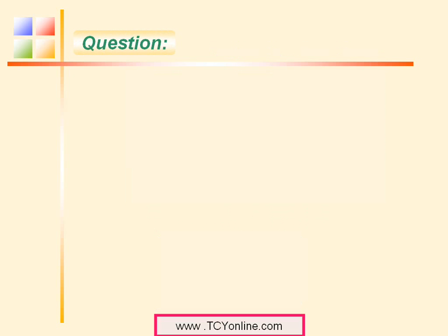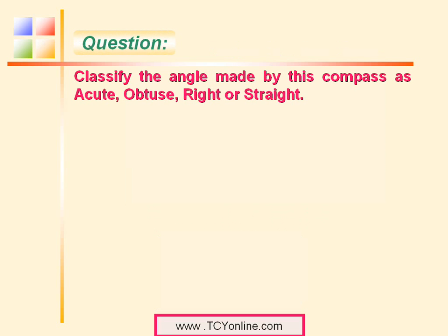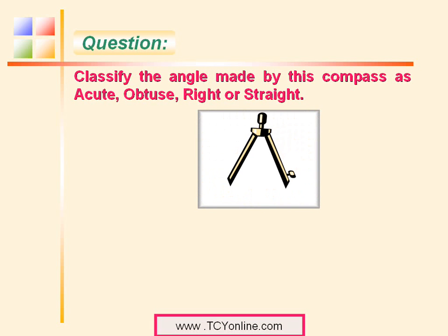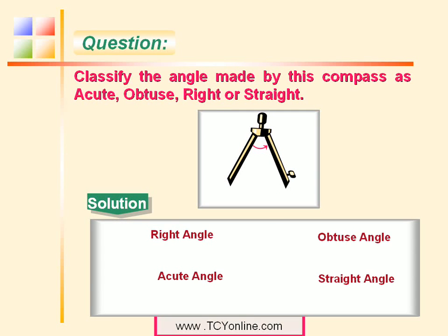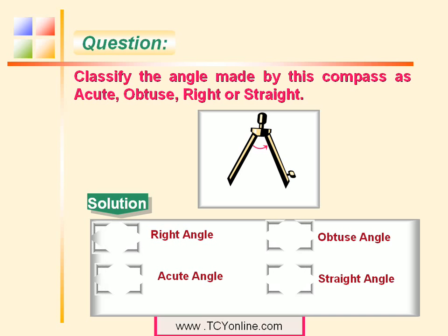Now look at this question. We need to classify the angle made by a compass as acute, obtuse, right, or straight. Look at the opening of the compass — when we look at this angle, we find that neither is it a straight angle nor a right angle. It appears to have a measure less than 90 degrees, so it is simply an acute angle.